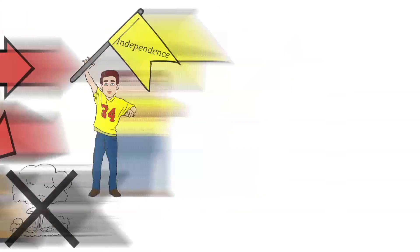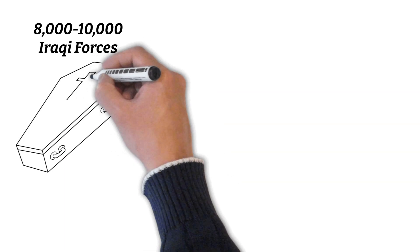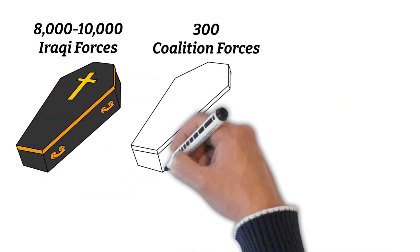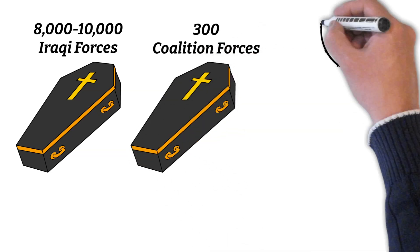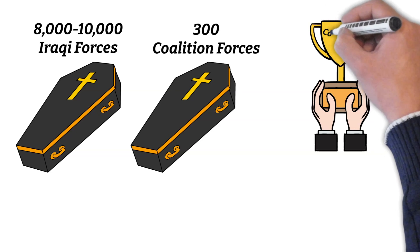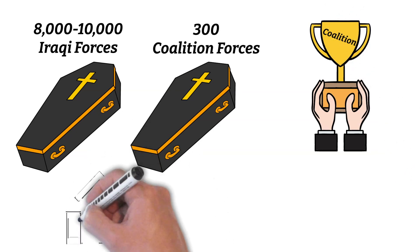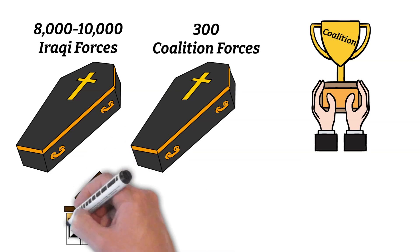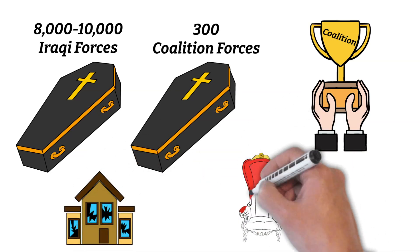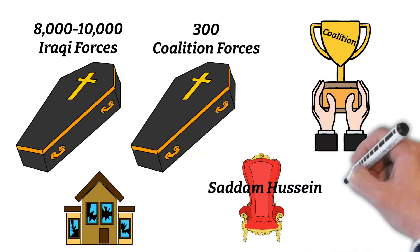In all, an estimated 8,000 to 10,000 Iraqi forces were killed, in comparison with only 300 coalition troops. Though the Gulf War was recognized as a decisive victory for the coalition, Kuwait and Iraq still suffered damage. And Saddam Hussein was not forced from power, which ended up causing problems later on.